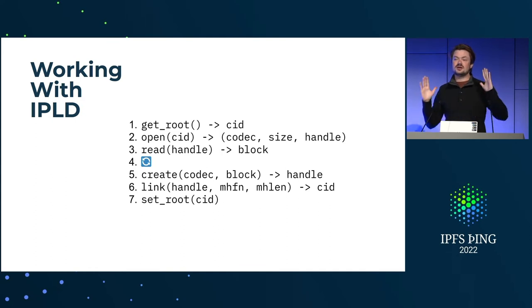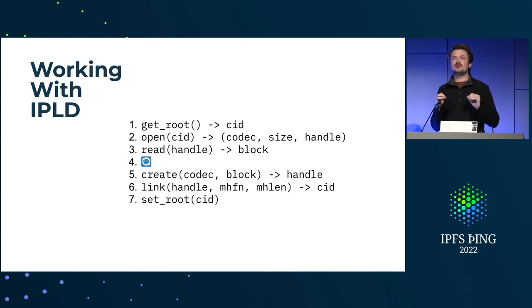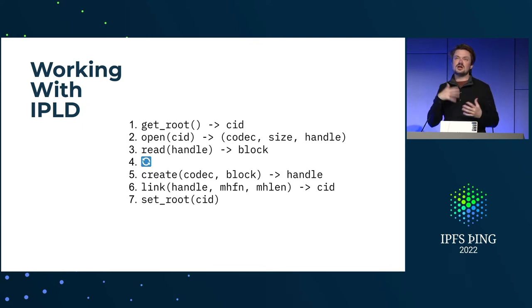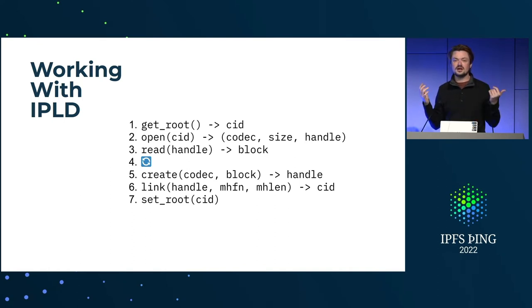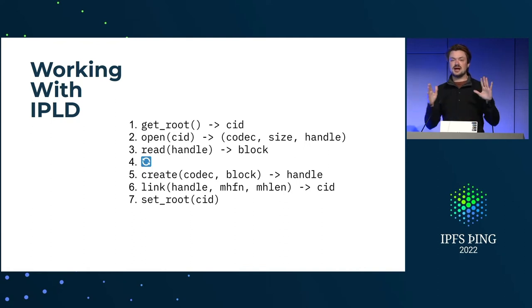In the FVM, we decode everything in the actors — basically in user space — for a couple of reasons. First, performance: if we did this in the kernel, there'd be lots of calling back and forth between the actor and the system. Another performance benefit is that if you know the shape of your data ahead of time — because you've compiled something that knows that shape — you can optimize your decoding accordingly, and if the shape doesn't match you just abort. Finally, by doing all the decoding in the actor, we have better security: if we did this in the FVM itself, malicious state from an actor could cause us to run out of memory. By doing it in the actors, everything is nicely sandboxed.